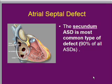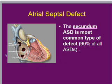In ASD there are varieties of septal defects. The most common in ASD is a defect known as the secundum defect. As you can see from the picture, the secundum defect is basically a hole right at the center of the septum.